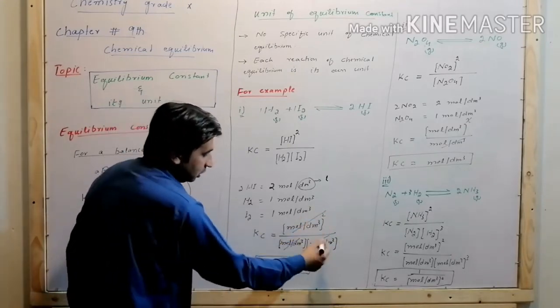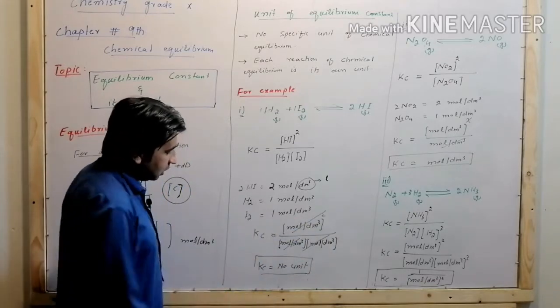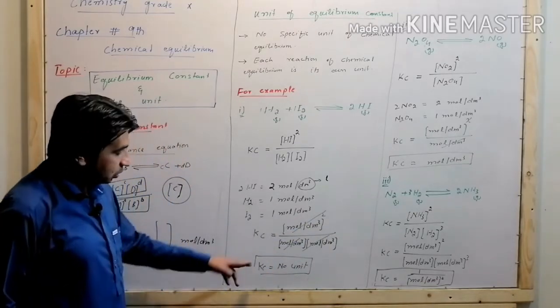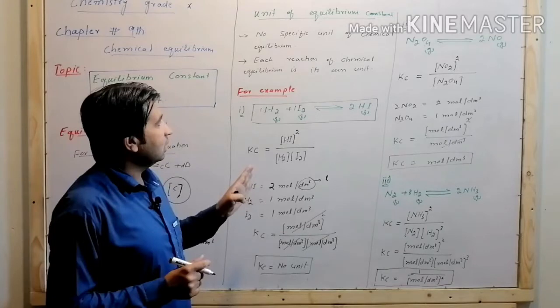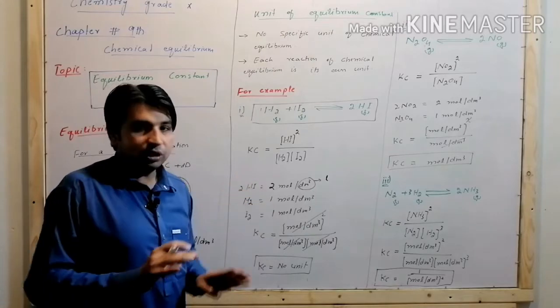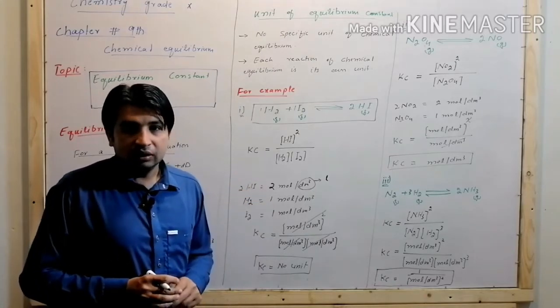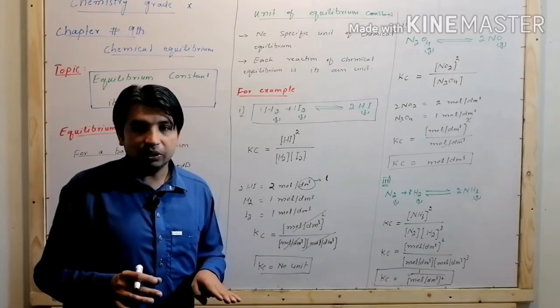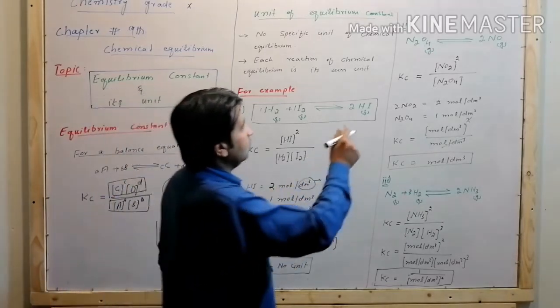After calculating the units, we find that the units cancel out in the numerator and denominator. So for this balanced chemical equation at dynamic equilibrium, the equilibrium constant Kc has no unit — the units cancel, giving a dimensionless Kc for this reaction.